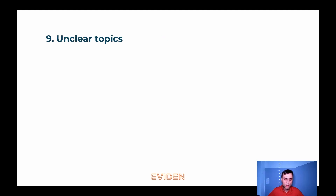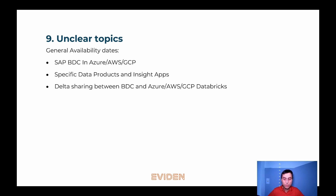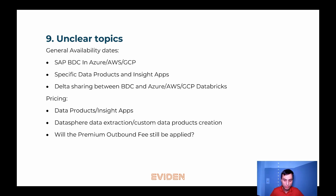Today we've discussed many important topics regarding SAP Business Data Cloud and Databricks. Of course, not everything is known yet. There are a few unknowns, especially regarding the general availability of SAP BDC in specific cloud environments, as well as the specific data products that will be available to SAP customers in the upcoming months. I'm also curious to better understand how data sharing will really work between BDC and Databricks. Last but not least, the pricing topic — SAP hasn't published any official pricing yet, but I'm curious to see how data products and Insight Apps will be priced, and whether the premium outbound fee will still be applied when transferring SAP data to Databricks.